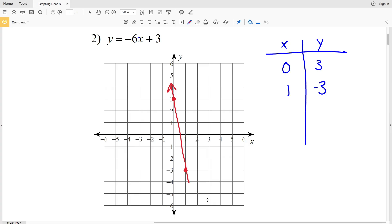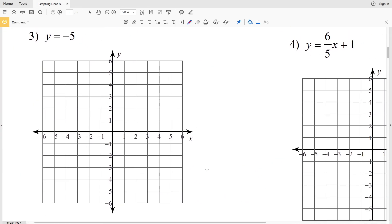And on to number 3. Number 3 says y equals negative 5, so this is going to be a horizontal line since the slope is 0. So go ahead, find where y equals negative 5 and just draw a straight line across.